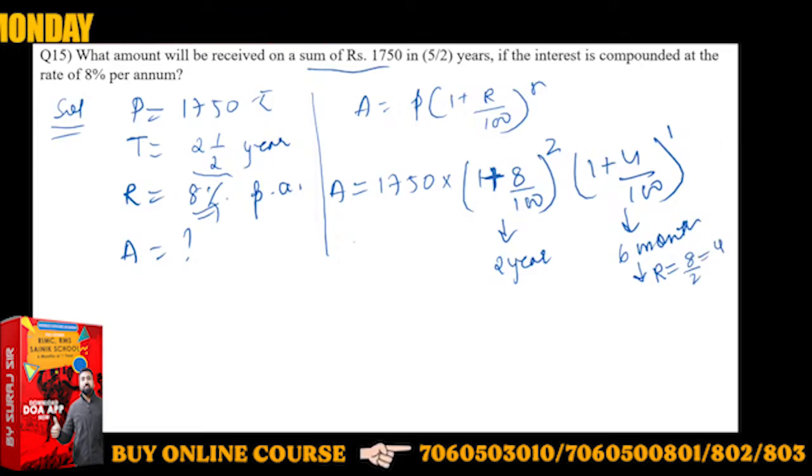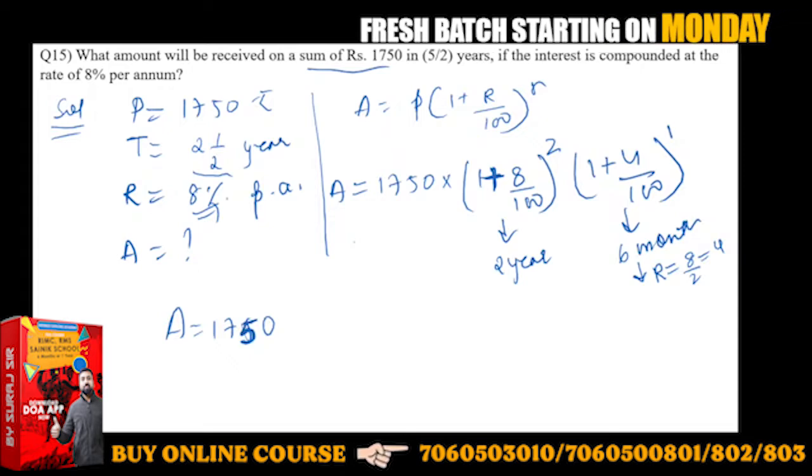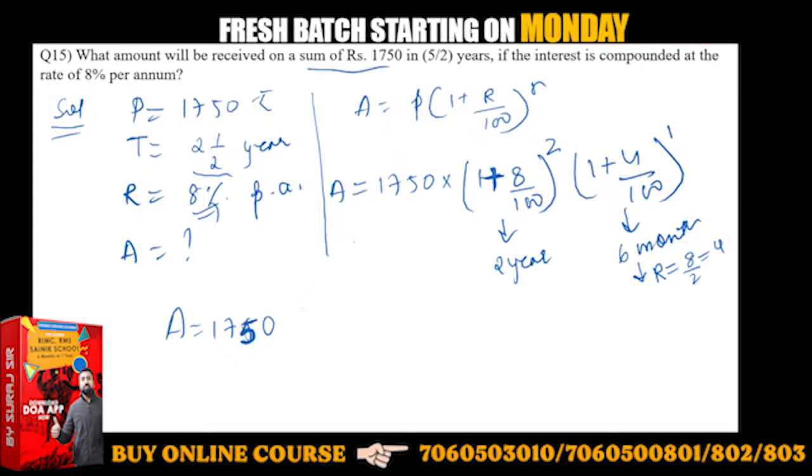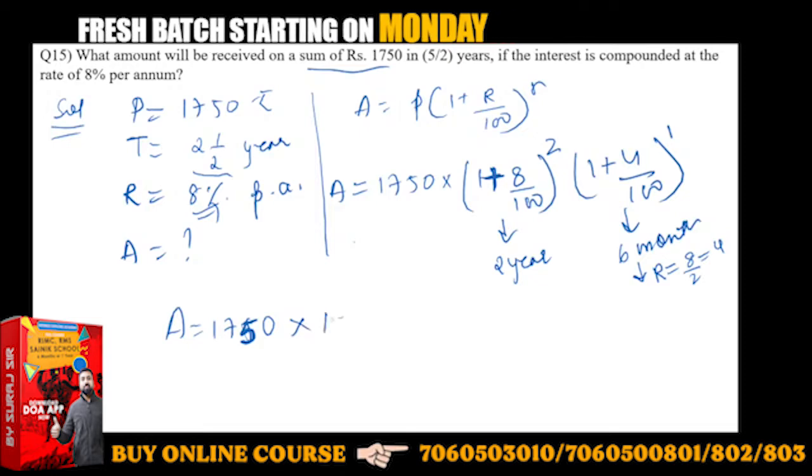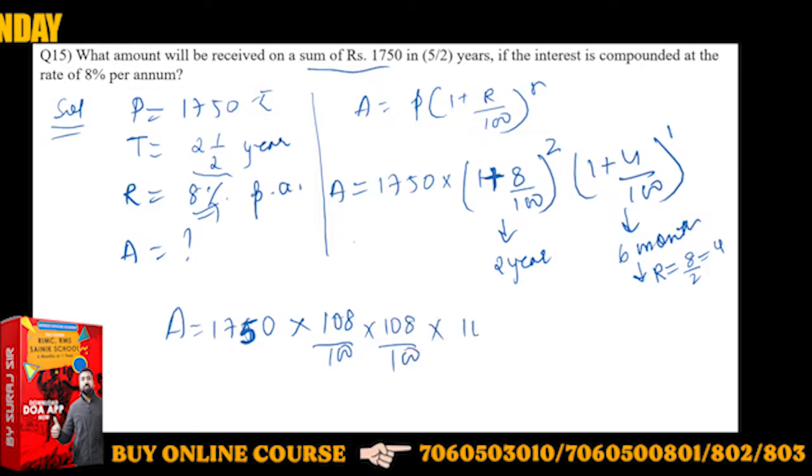Now we just have to solve this. A will be equal to 1750. If you don't understand, please watch my video based on simple interest and compound interest. This will be 108 upon 100 into 108 upon 100 into 104 upon 100.